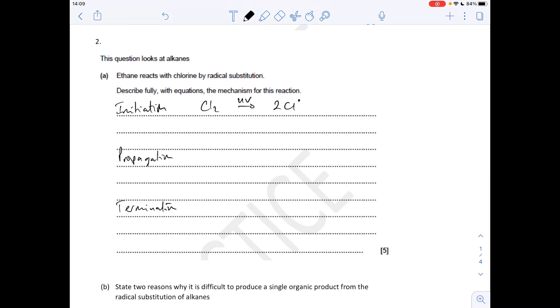The propagation steps - there's always two of these. You take your alkane, C2H6 in this case, take one of your chlorine radicals, and the chlorine will take a hydrogen and make an HCl molecule. What's left of the ethane will be C2H5, but it's now a radical so we put a dot on it.